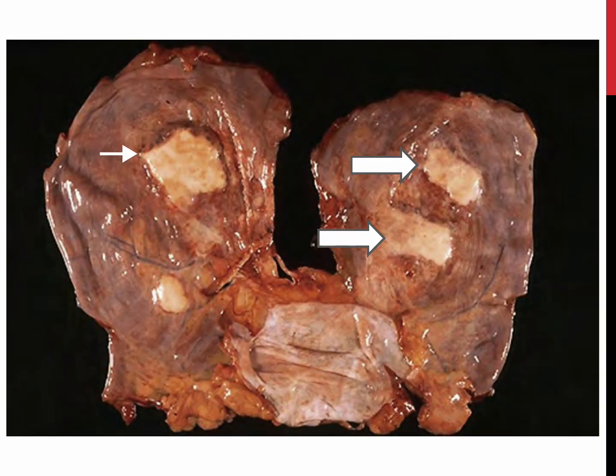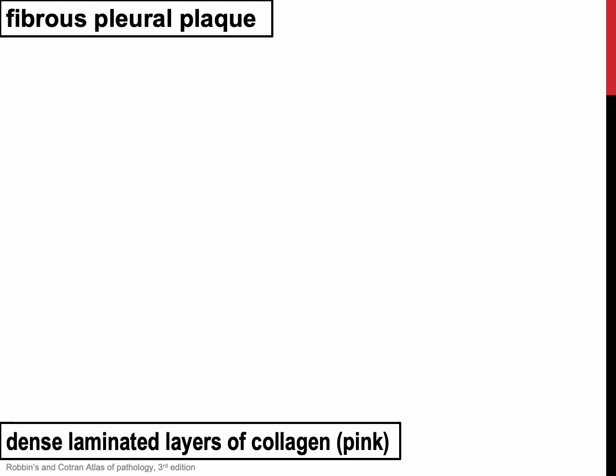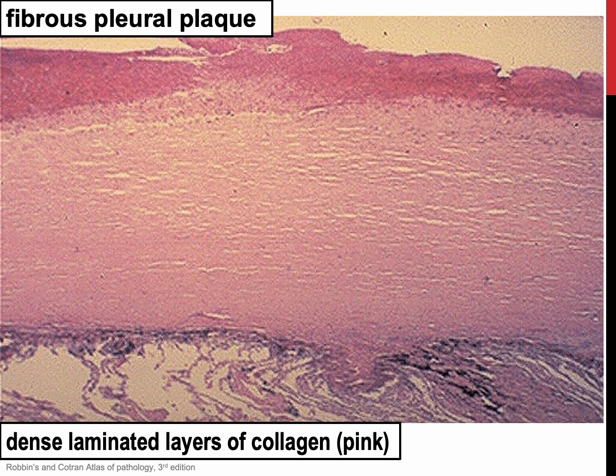The most common manifestation of asbestos exposure is the pleural plaques. The white arrows point to the tan-white multiple pleural plaques on the pleural aspects of the diaphragm. These plaques develop most frequently on the anterior and posterior lateral aspects of the parietal pleura and over the dome of the diaphragm. Histologically, pleural plaques are made of dense laminated layers of collagen.